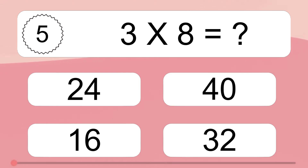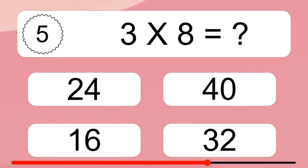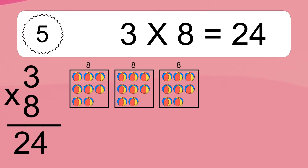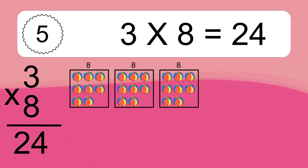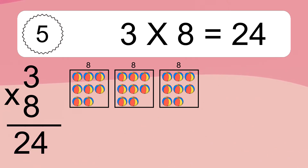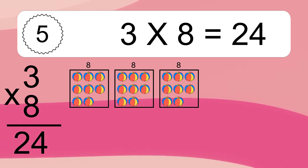3 times 8 equals what? 3 times 8 equals 24. If you count all the balls in all the boxes together, you will have 3 times 8 balls. This equals 24 balls.